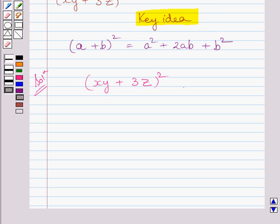So substituting xy for a and 3z for b on right hand side of this identity, we get xy plus 3z whole square is equal to xy